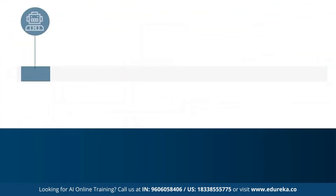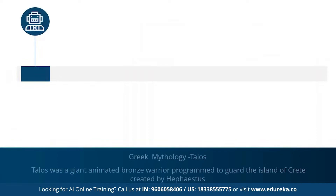The concept of AI goes back to the classical ages. Under Greek mythology, the concept of machines and mechanical men were well thought of. An example is Talos — a giant animated bronze warrior who was supposedly programmed to guard the island of Crete.